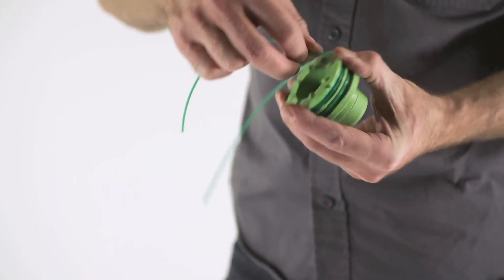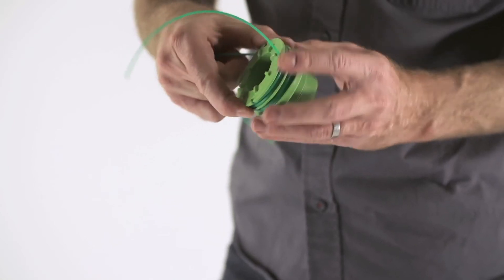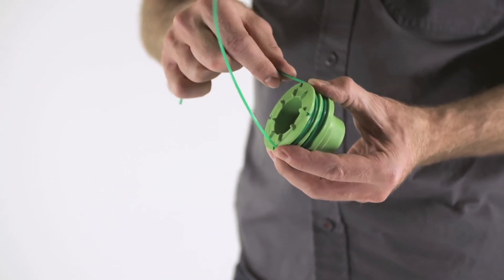Place the ends of the line in the two opposite notches in the spool with about 4 inches sticking out of each side.